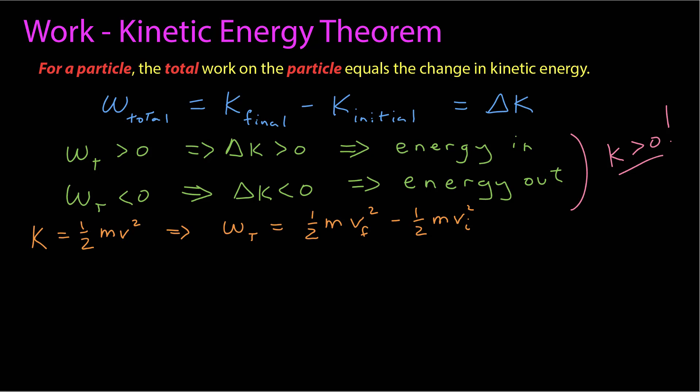So if I were to substitute that in, that tells me that the total work is one-half m, the final velocity squared, minus one-half the mass times the initial velocity squared. So let's just do a couple examples.